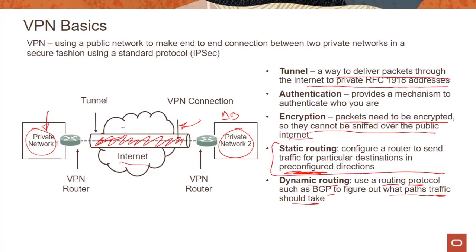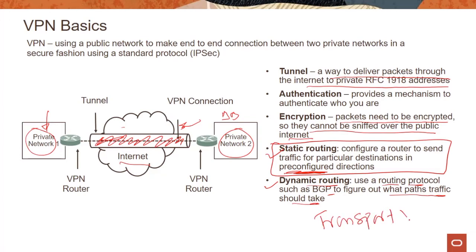It used to be that OCI only supported static routing for a while, but now we support both static and dynamic routing, and I'll show this in the demo. Now, when you talk about IPsec, there are two modes. One is called transport mode, where IPsec encrypts and authenticates only the actual payload of the packet and the header information stays intact. The other mode is called tunnel mode, where IPsec encrypts and authenticates the entire packet — after encryption, the packet is encapsulated to form a new IP packet with different header information. In the case of OCI, we only support tunnel mode. We don't support transport mode, so just remember that OCI supports tunnel mode and not transport mode.